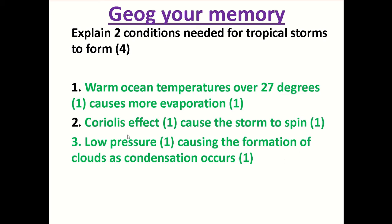The final condition you could talk about is that it has to be in a low pressure system. This low pressure causes the formation of clouds and condensation occurs. You need low pressure, which causes your air to rise up. As the air rises, temperatures decrease, which leads to condensation, giving your tropical storm those high rainfall conditions.